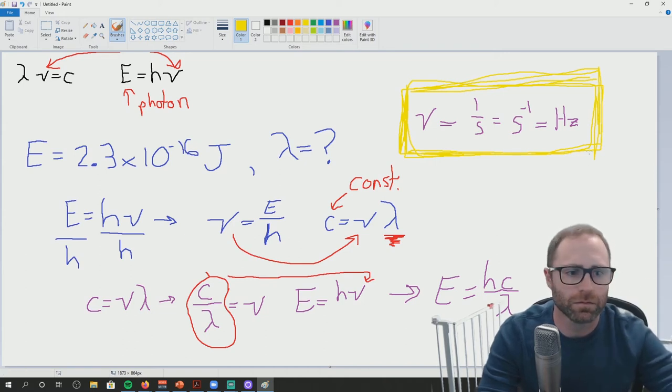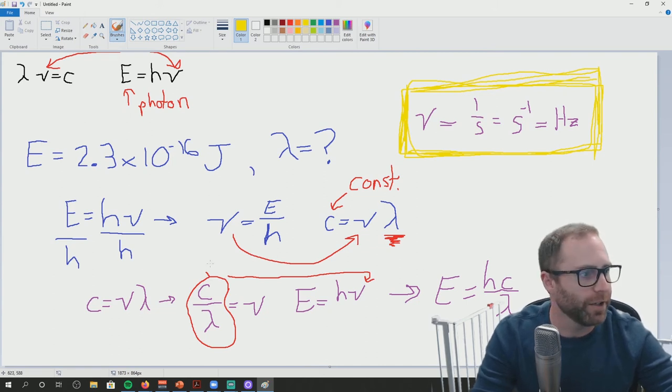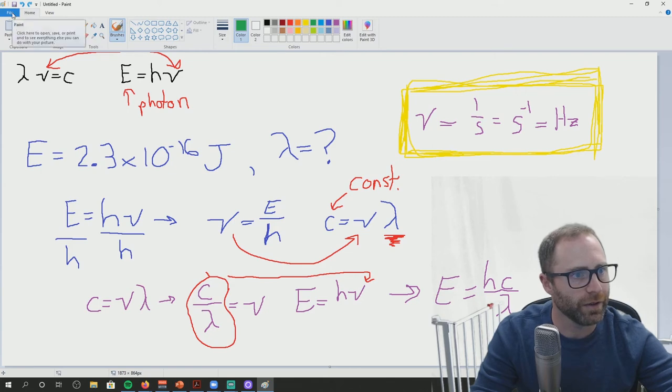Should wavelength always be in nanometers or does it? All right. That's a great question. Should wavelength always be in nanometers? So wavelength, let's get rid of that yellow. Yellow is hard to see for old eyes. Let's get a new screen.